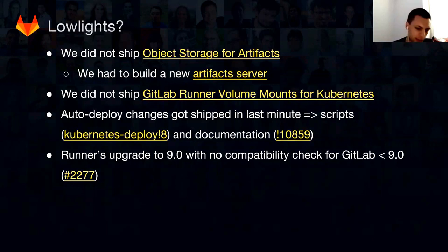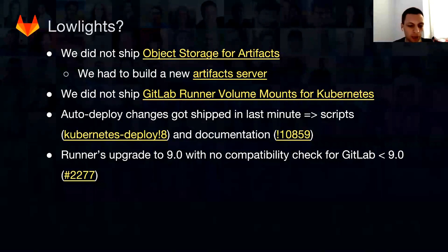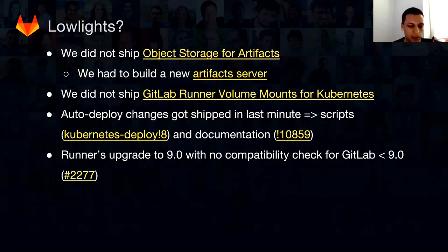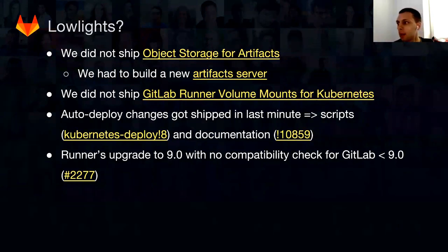GitLab Runner volume mounts for Kubernetes — something that has been in progress for about three months — still hasn't shipped, mostly because of focus on other things, and because for a long time we didn't have a very clear explanation of the proposal. Auto deploy changes — the tweaks that allow you to use canaries, private images, and databases — got mostly shipped last week. We stretched this deadline because it's a separate repo, but I know that Axil, Joshua, and Mark were working on final documentation touches on Friday before Saturday — very late, and something that should not happen.